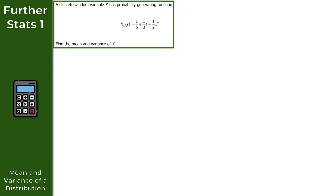Let's get started with question 1. We are given a discrete random variable x which has the following probability generating function: g of x in terms of t equals this expression. The question asks us to find the mean and variance of x. The first thing we need to do is find the first derivative of our PGF. Going term by term: the 1 over 6 is a constant, so it differentiates to 0; 1 over 3 times t differentiates to 1 over 3; and 1 over 2 times t squared differentiates to t.